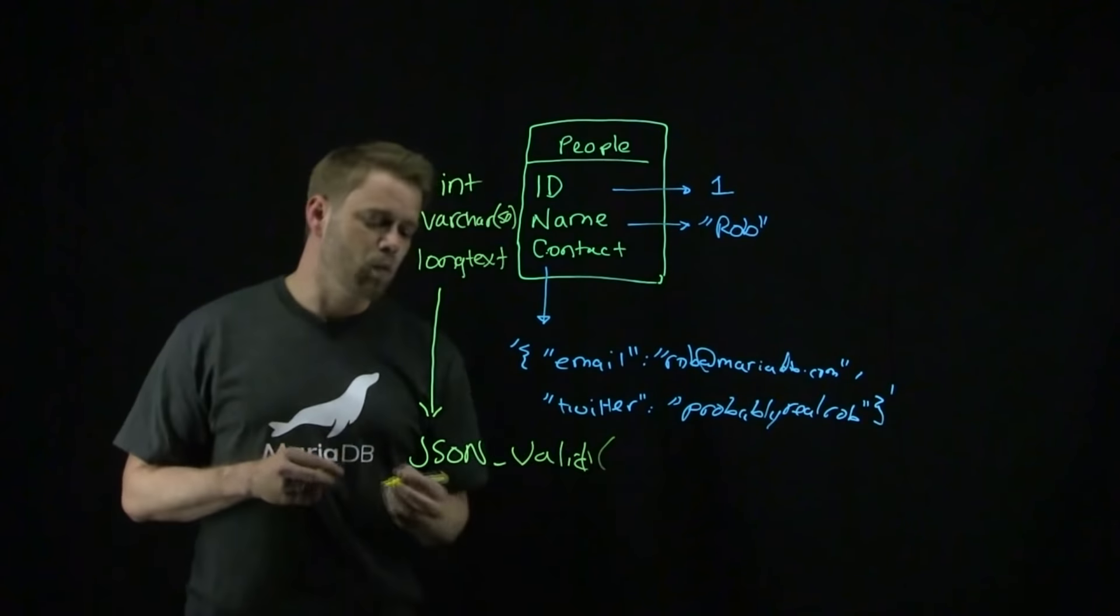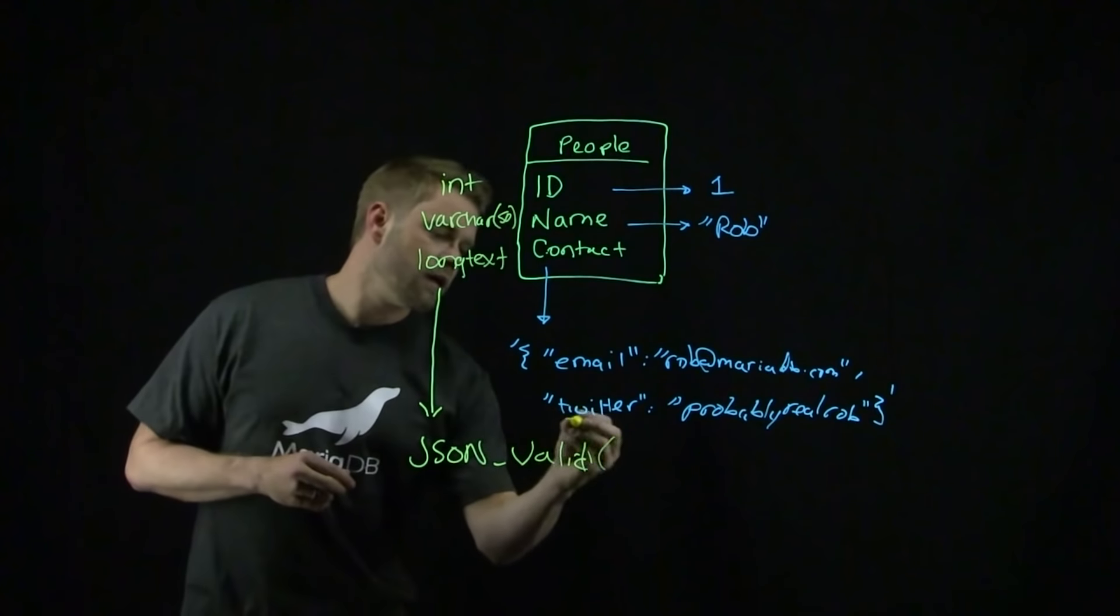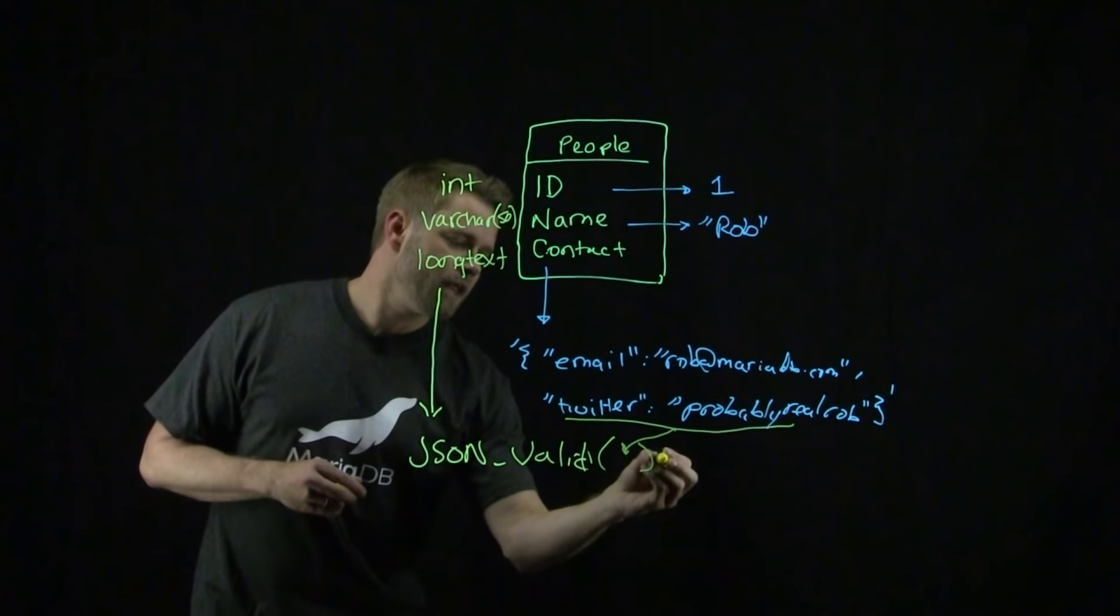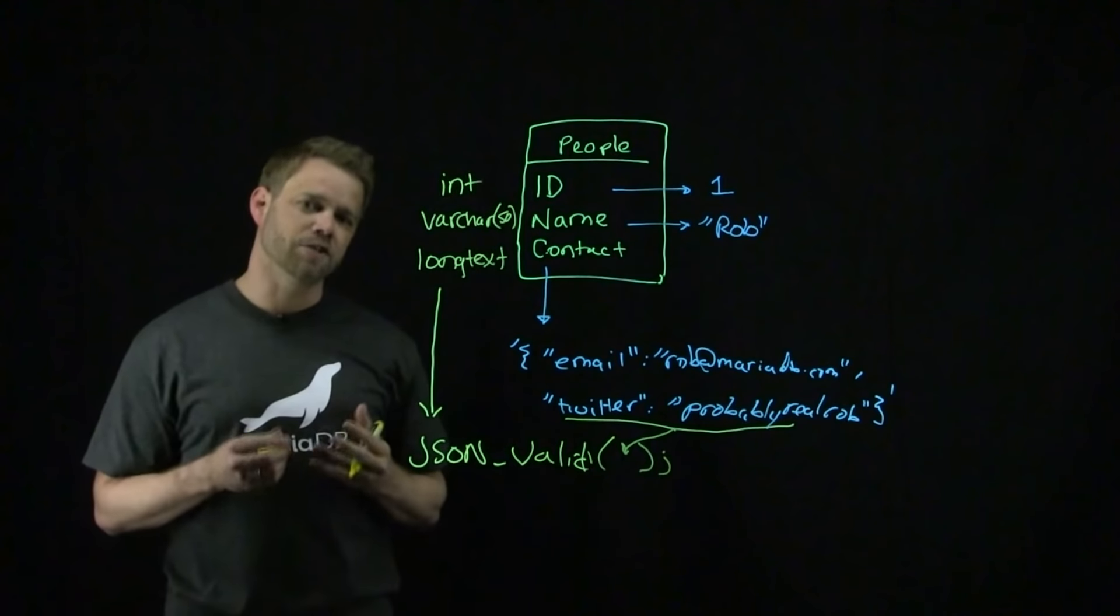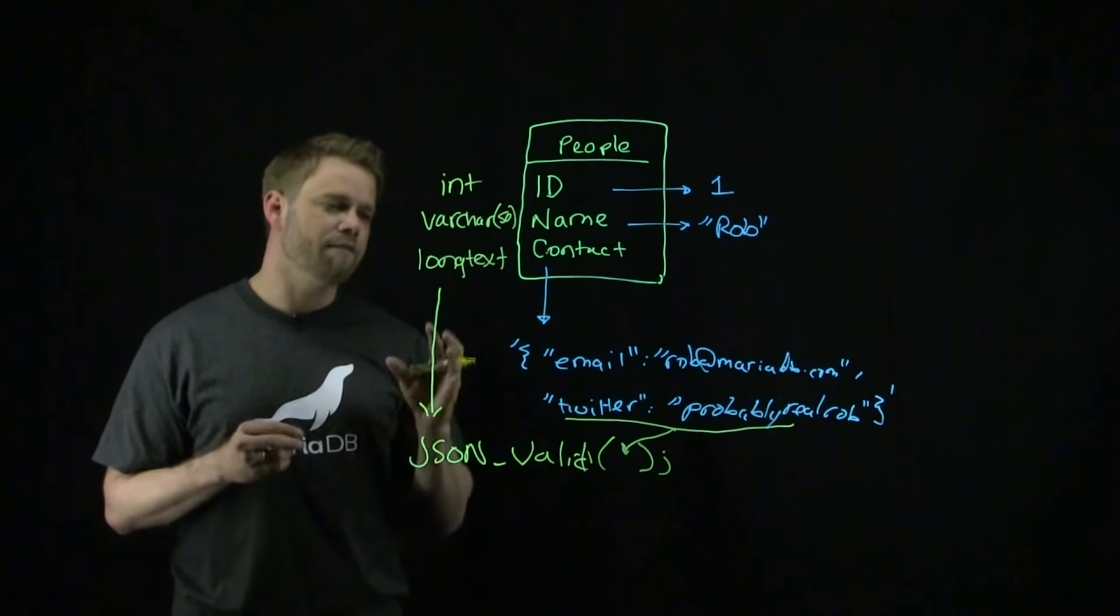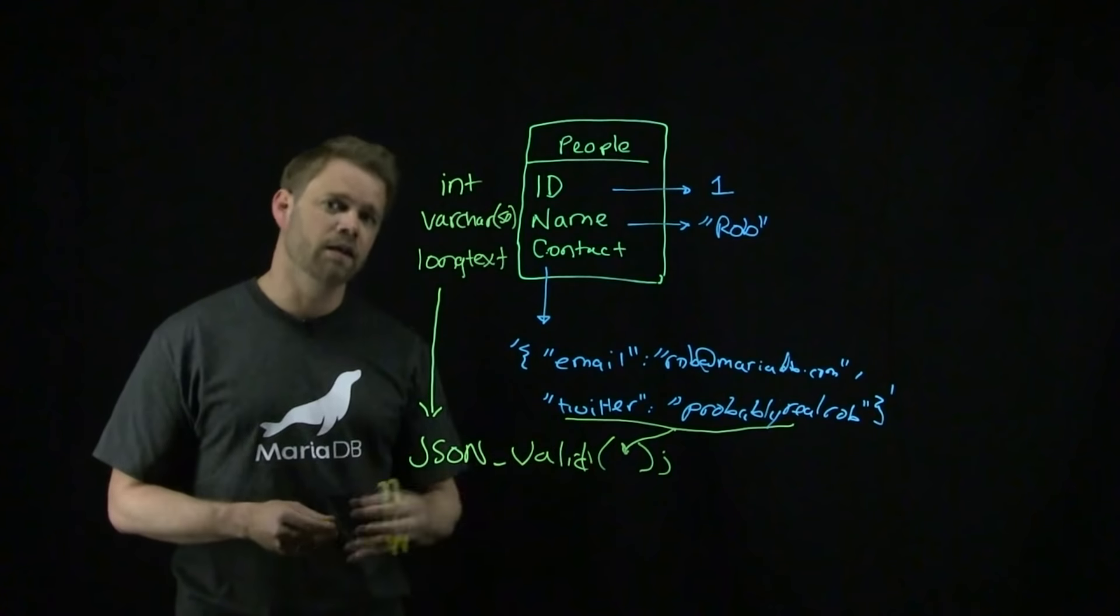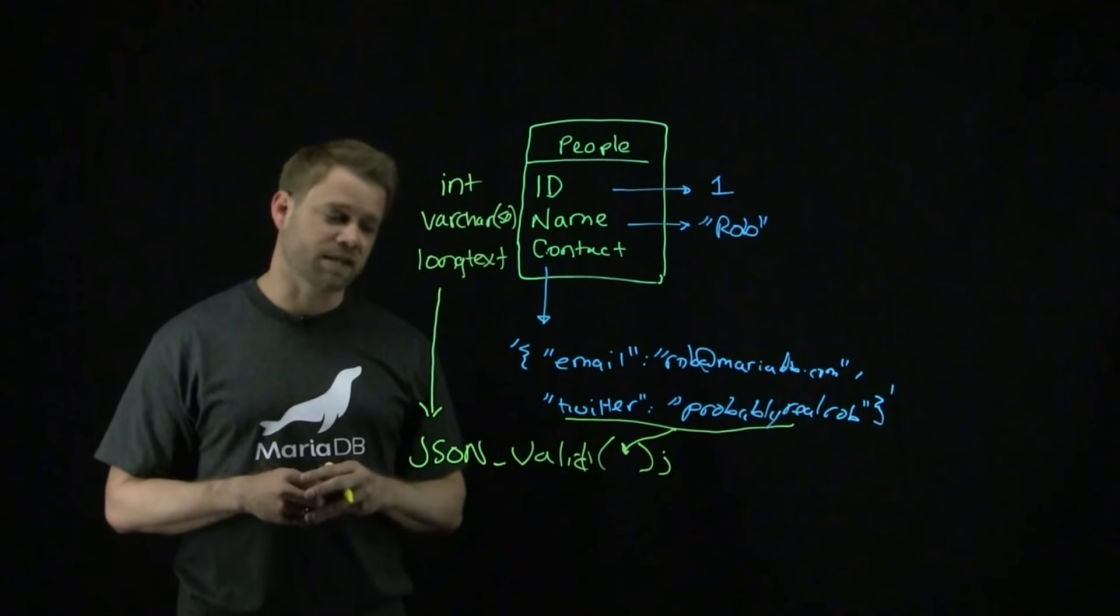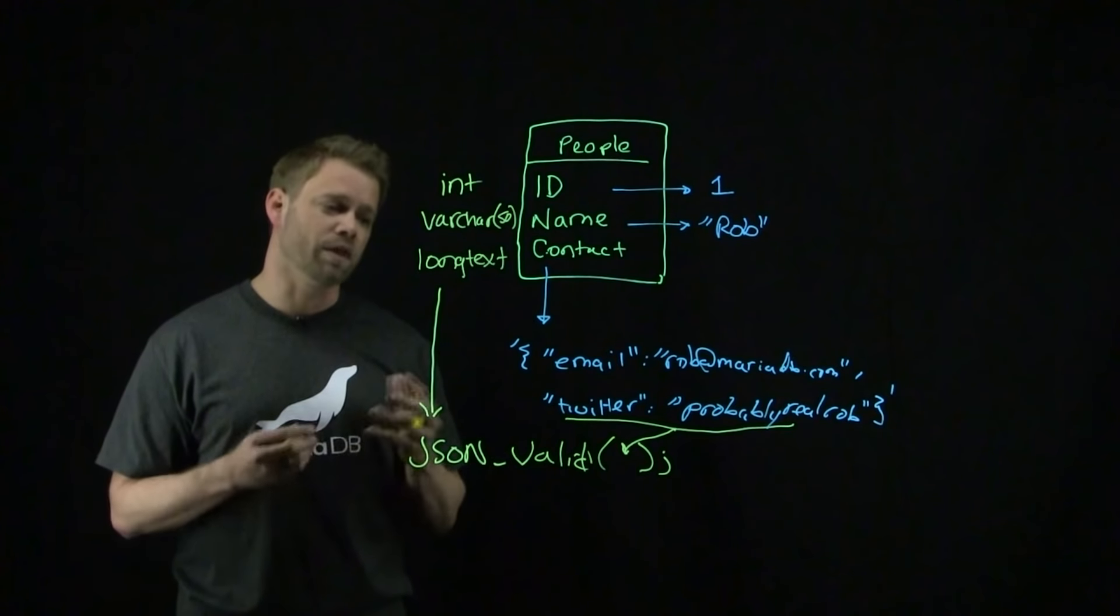It will take the JSON information into this function, and it's going to function as a check constraint, simply verifying or validating that the information inside of the contact field is JSON. That's it. That's all there is to using JSON within MariaDB.